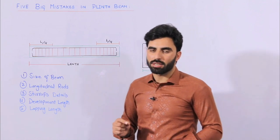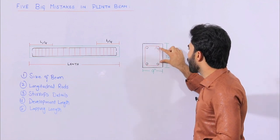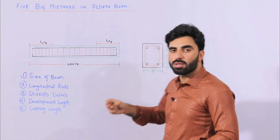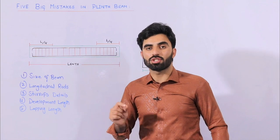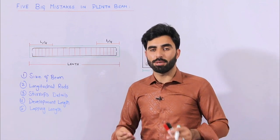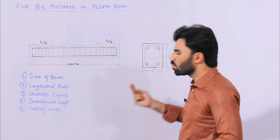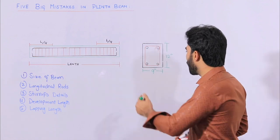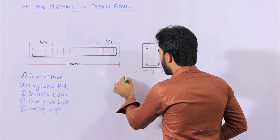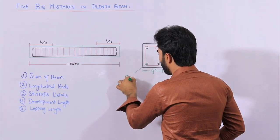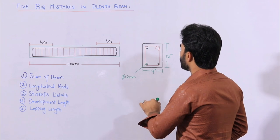The second mistake is for longitudinal bars. Remember, if you are making a one-story residential building — not a commercial building — you can use four steel rods. But if you are going for a double story or three stories, hire a structural engineer to provide the structural drawing for steel reinforcement, whether it is beam, column, slab, or foundation. For one story you can use four steel rods, and the diameter should not be less than 12 mm — two steel rods at the bottom and two at the top.